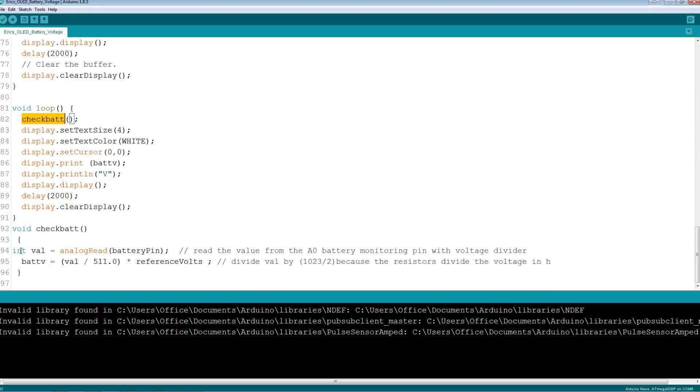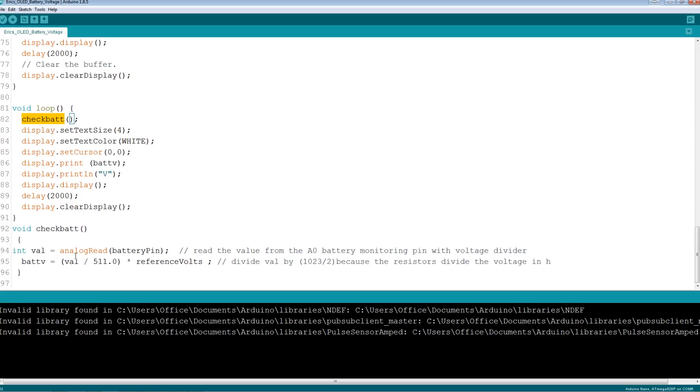In the check bat function there is not much to this. We're going to take an analog read of the battery pin. This is going to give us a result from zero to 1023. We're going to take that and divide it by 511 and we're going to multiply it by the reference voltage. Then this is going to give us our battery voltage. Nothing to it. The 1023 is the limit of the resolution on the analog to digital converter in the Arduino. Lots of information on the web, we won't go into it here, but now we have a functional voltmeter and we're all set.